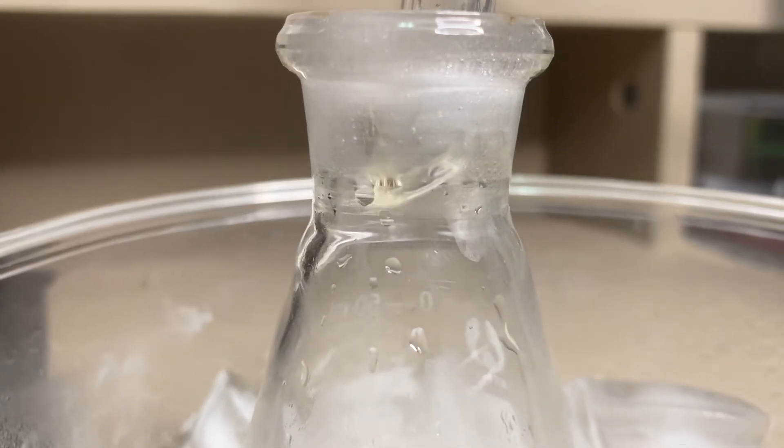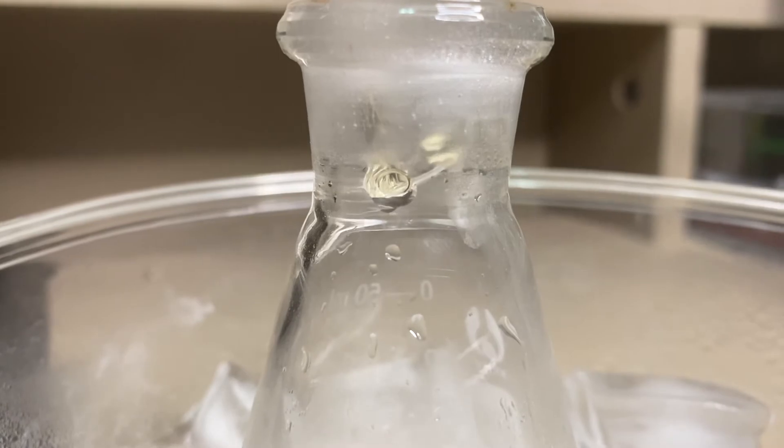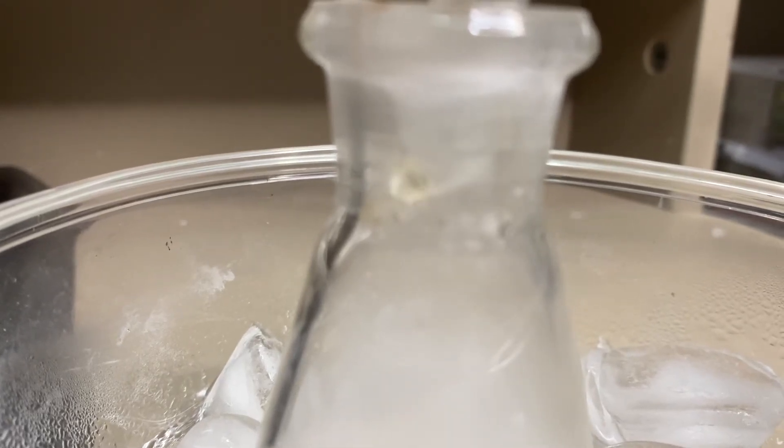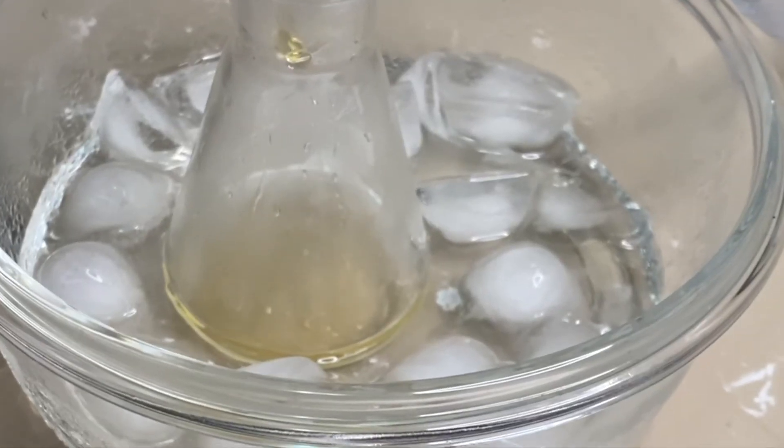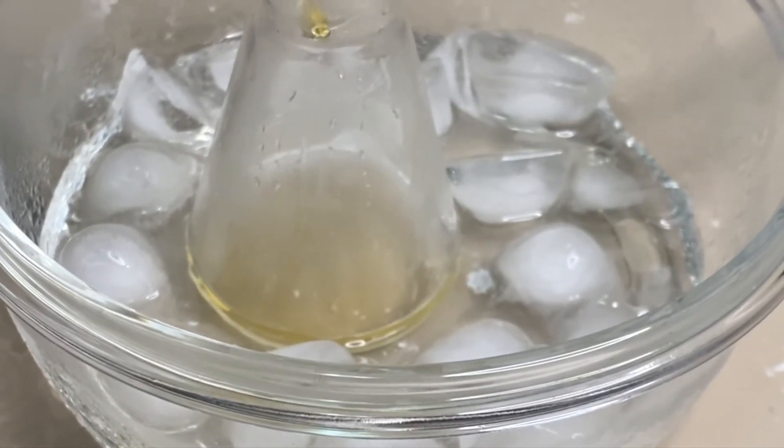After a while, some clear distillate was collected. It was quite clear at first, but as the reaction progresses, the distillate starts to take on a slight yellow-brown color due to the formation of some impurities.